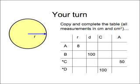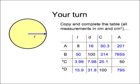OK, here are the answers. I suppose, technically speaking, the answer for the area for row B is wrong. It should read 7,860 to three significant figures.